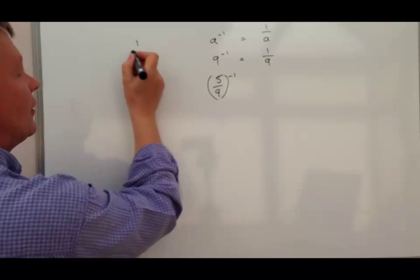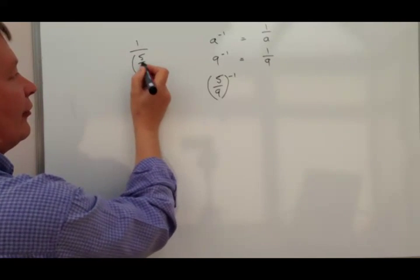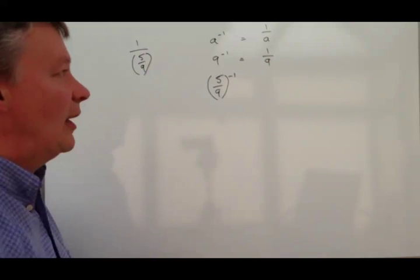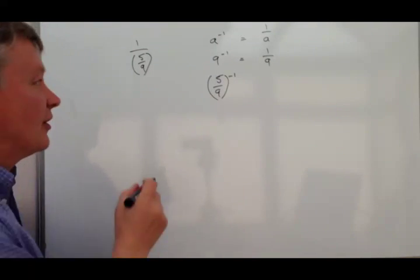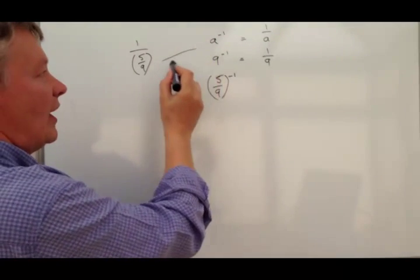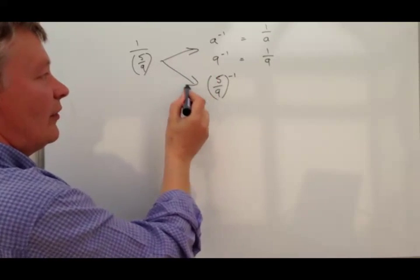So if you like, you've got something like 1 over 5 over 9. So that's exactly what you're doing in the same way as you're dealing with those.